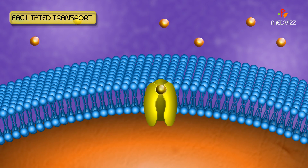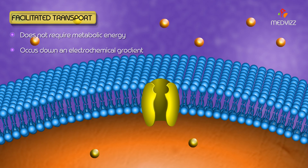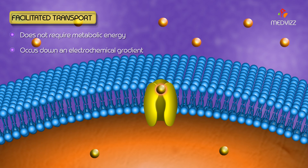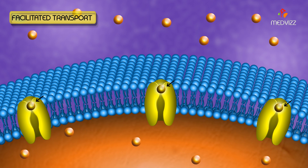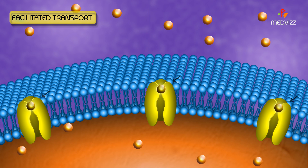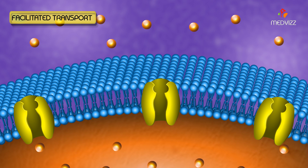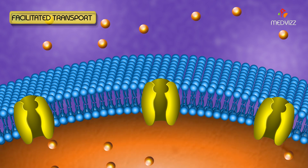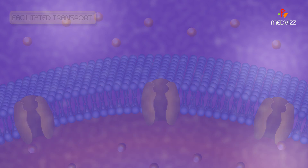Facilitated Transport. This does not require metabolic energy and occurs down an electrochemical gradient. The transport stops when the carrier molecules become saturated, or when the concentration of the substance inside the cell becomes equal to the extracellular concentration.